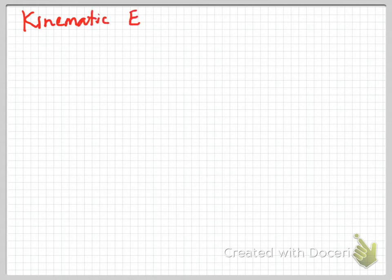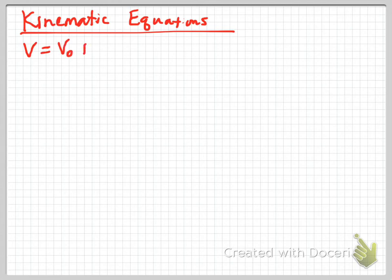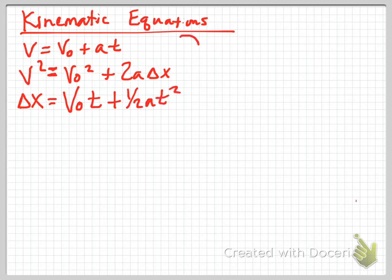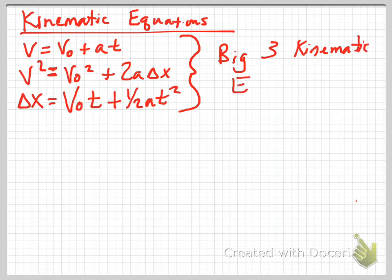Now we'll look at our kinematic equations. In AP Physics 1, the velocities in these equations were called final velocity and initial velocity, written on your equation sheet as V and V-naught, where V is the final velocity and V-naught is the initial velocity. The three main kinematic equations are: V equals V-naught plus AT; V squared equals V-naught squared plus 2A times change in X; and change in X equals V-naught times T plus one-half AT squared.